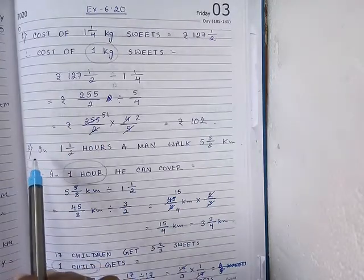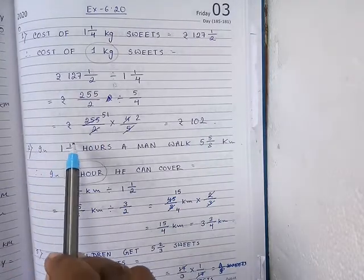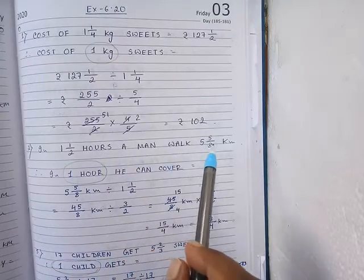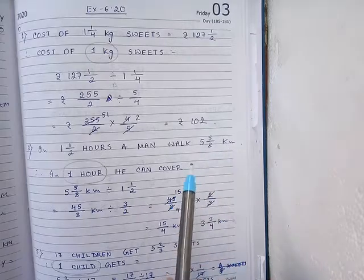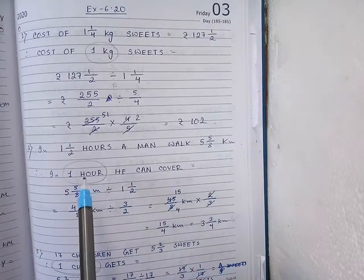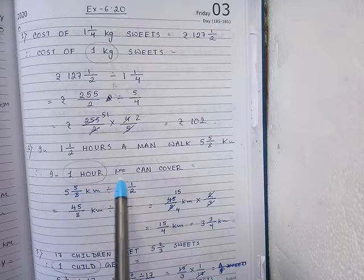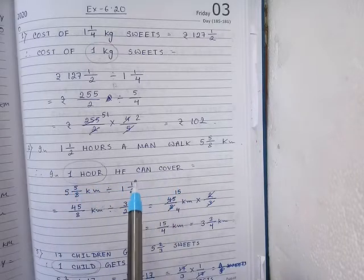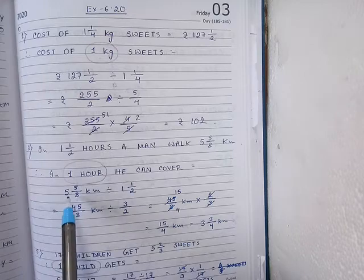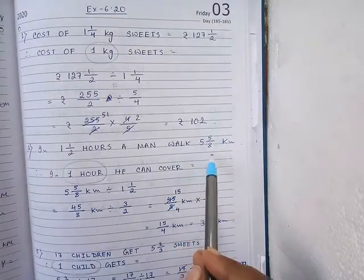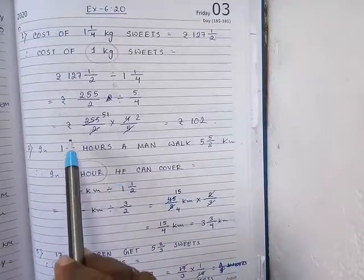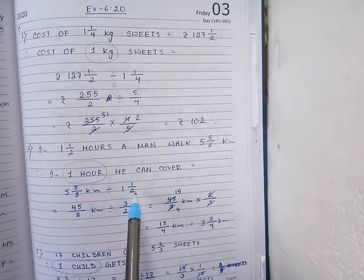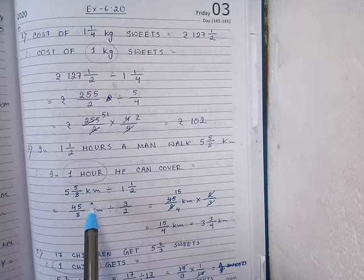Next, question number 2. In 1 whole number 1/2 hours, a man can walk 5 whole number 5/8 kilometres. Our question is: what distance does he cover in 1 hour? That means we are finding the distance for 1 hour, so we have to divide. First, write down the distance: 5 whole number 5/8 kilometres divided by 1 whole number 1/2. Since we are finding the distance, the unit will be kilometres, so I have written the unit kilometres only.